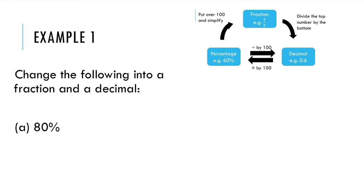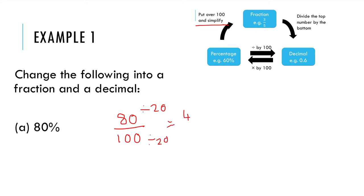Let's look at our first example: change the following into a fraction and a decimal. Using my diagram, I can see that going from a percentage to a fraction, I need to put it over 100 and simplify. So to get to a fraction, I'm going to do 80 over 100. I look for the biggest number that goes into 80 and 100 — that's 20. So I divide top and bottom by 20 and I get 4 over 5. So that is 80% as a fraction.